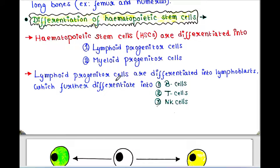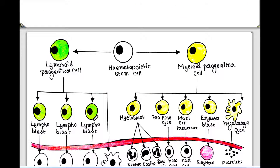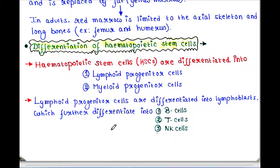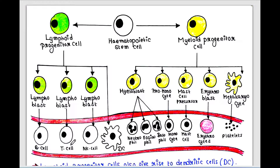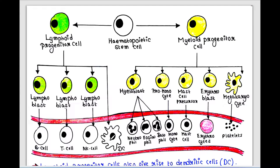Lymphoid progenitor cells are differentiated into lymphoblasts, which further differentiate into B cells, T cells, and NK cells. Lymphoid progenitor cells also give rise to dendritic cells, or DCs.